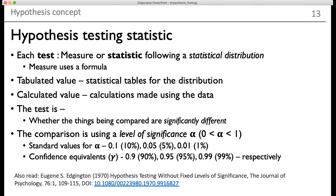Whenever we are talking about hypothesis testing, there is a measure, and this measure follows a statistical distribution — a mathematical function which gives us the probability. The measure is calculated from the data collected from the experiment, giving a calculated value, while the distribution gives us the theoretical tabulated value. The basis for comparison is called the level of significance, denoted as alpha. Standard values of alpha are 10% (0.1), 5% (0.05), and 1% (0.01).